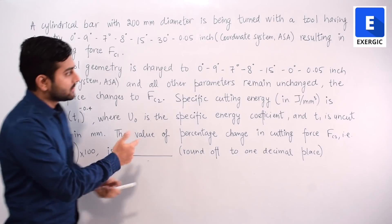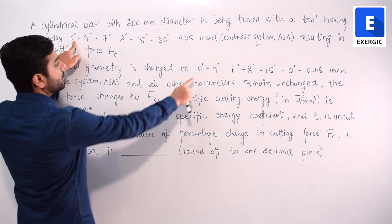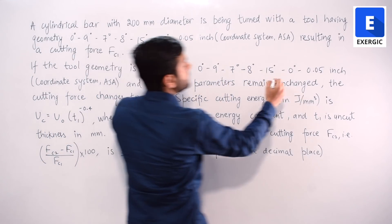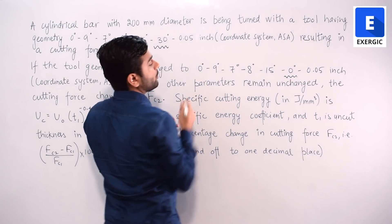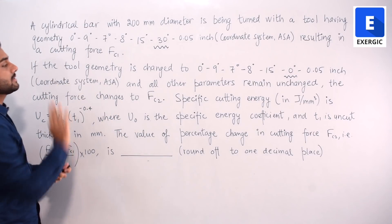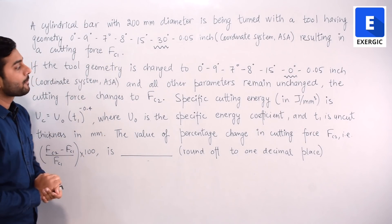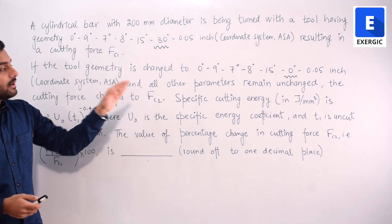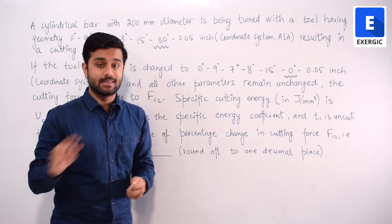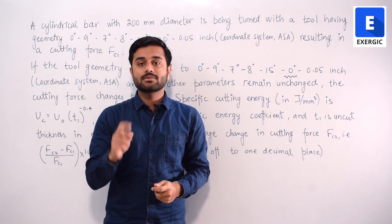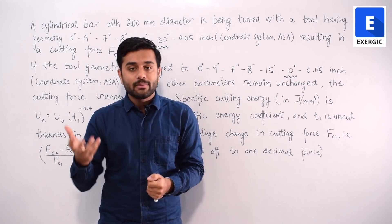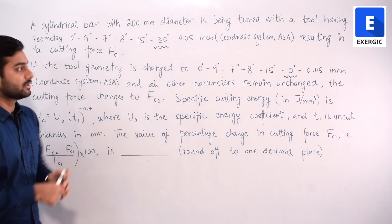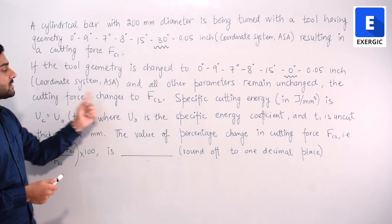If the tool geometry is changed, the values 0°, 0°, 9°, 9°, 7°, 7°, 8°, 8°, 15°, 15°, 30° remain the same except the side cutting edge angle changes from 30° to 0°, and tool nose radius of 0.05 inch stays the same. Both are in ASA coordinate system. All other parameters remain unchanged, and the cutting force changes to FC2.